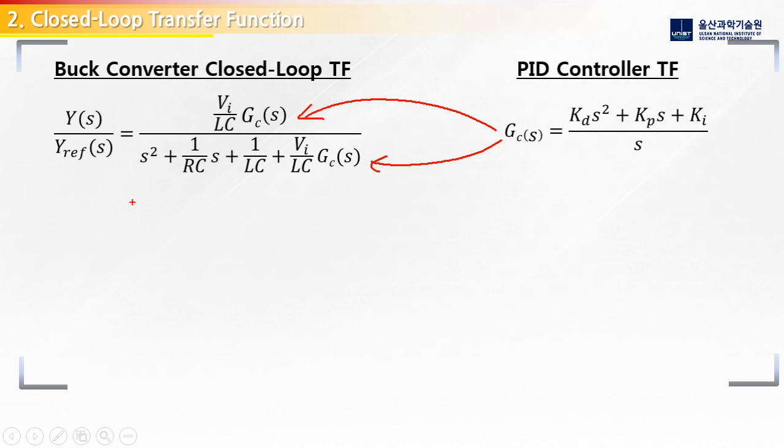First, we simply write it out. It will be a little bit long, but let's just write everything out. Here we substitute in our equation: KD s squared plus KP s plus KI. There we go. All of this is over s.